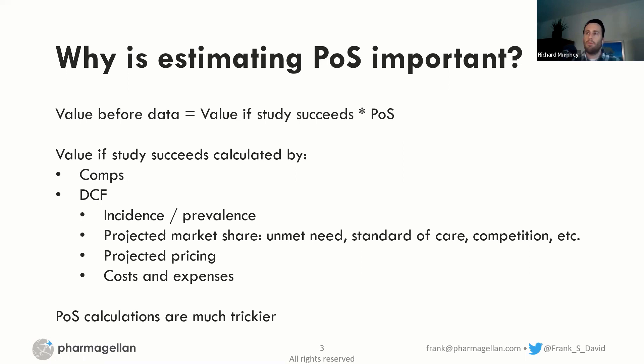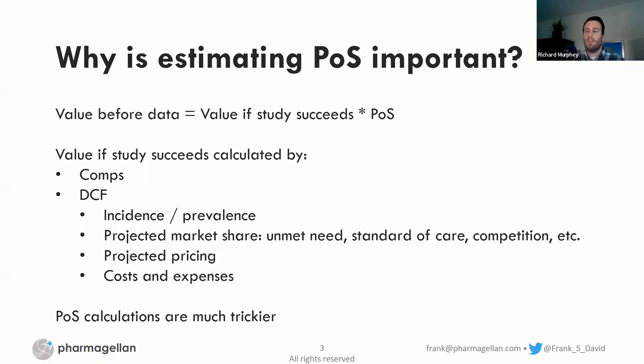Jumping into a quick overview of how probability of success ties into valuation: if you're looking at a clinical trial readout, the value of the company before the data is essentially equal to the value if the study succeeds times the probability that it succeeds. You calculate the value-if-success component using comps or DCF methods — the total number of potential patients, market share vis-à-vis competitors, pricing, costs, and expenses. But the probability of success calculations are much more nuanced and a little bit trickier.